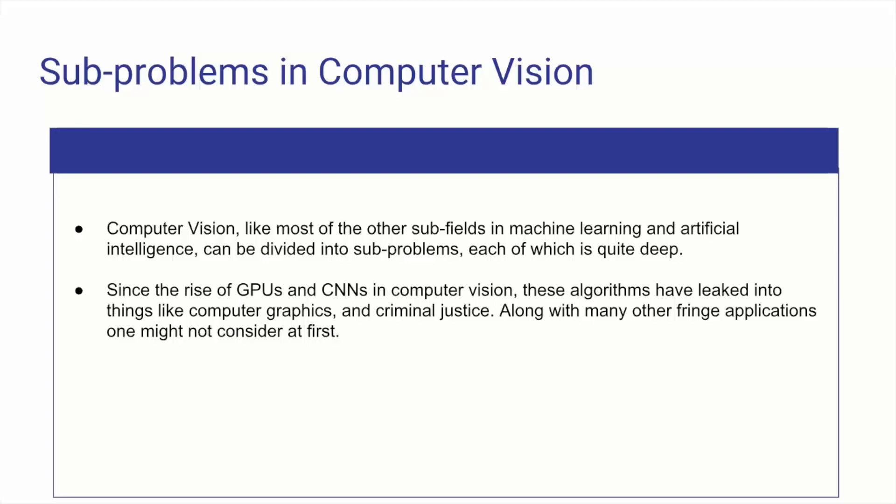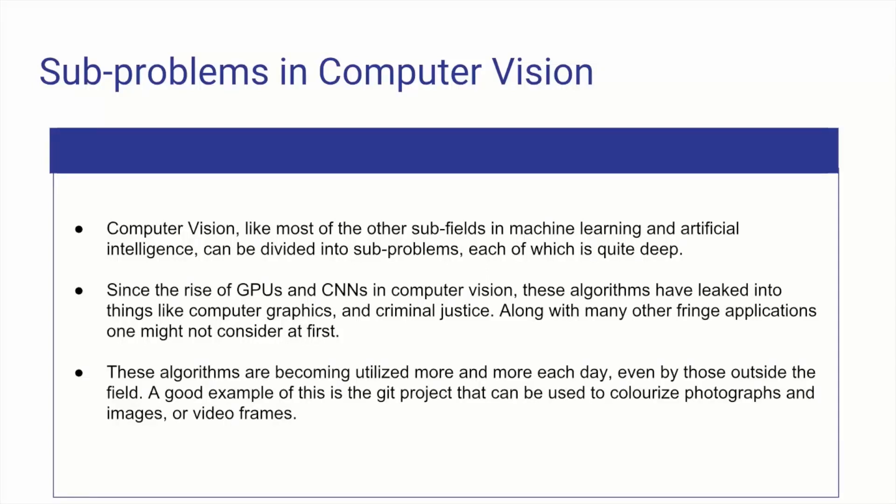Having a policeman with a database of images and being able to detect whether or not it's you just by having their body cam scan the environment — that's quite a scary concept. They use body cams for object detection, mostly to identify suspects who have warrants out or are suspected of committing a crime. This shows that these algorithms are starting to have fringe applications in places you might not expect, and they're being utilized more and more each day.